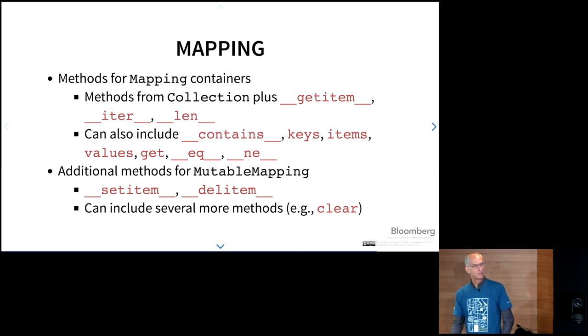For mapping, mappings are also containers. So they start with collection. But then they also support get item, iter, and len. But they also include things like contains, keys, items, values. So basically, it should work similar to a Python dict. For additional methods, if you wanted to have a mutable mapping, you would need to have dunder set item and dunder del item. And there are several other methods that you could include, such as clear.